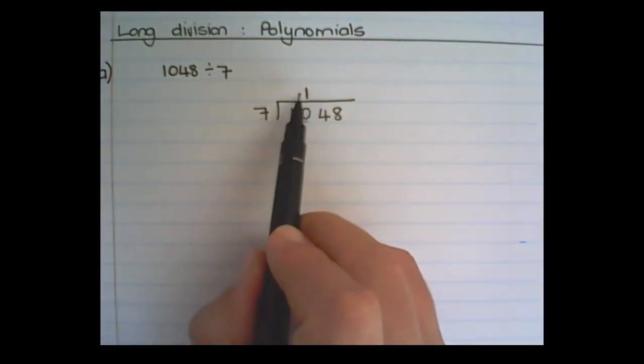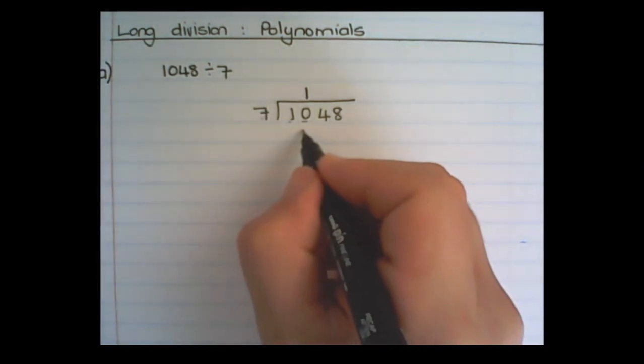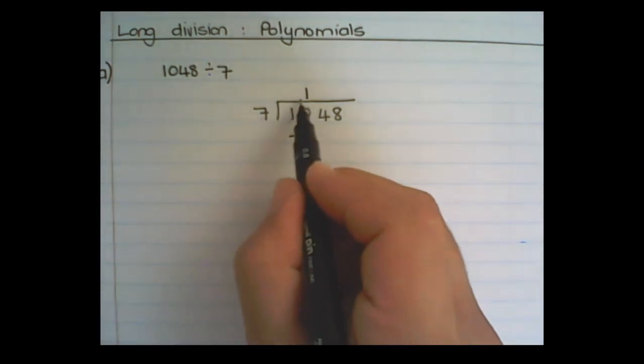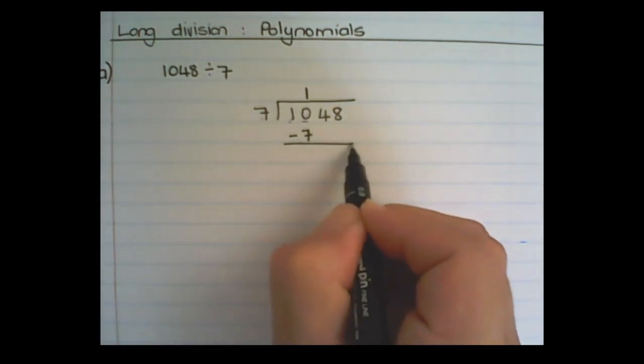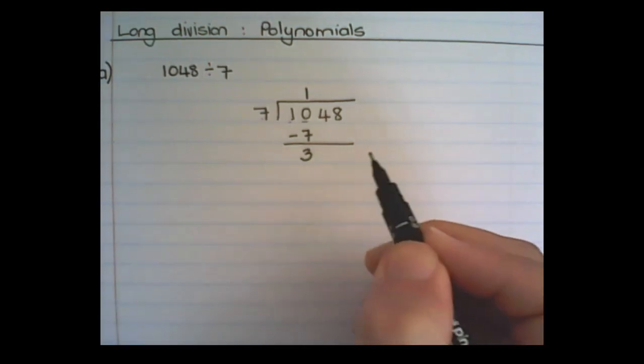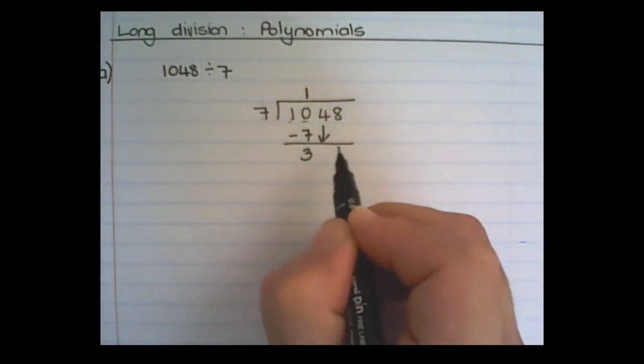Then I multiply 1 with 7, which is 7. And that's the digit I subtract from 10. So 10 minus 7 is 3. And I bring the 4 down.